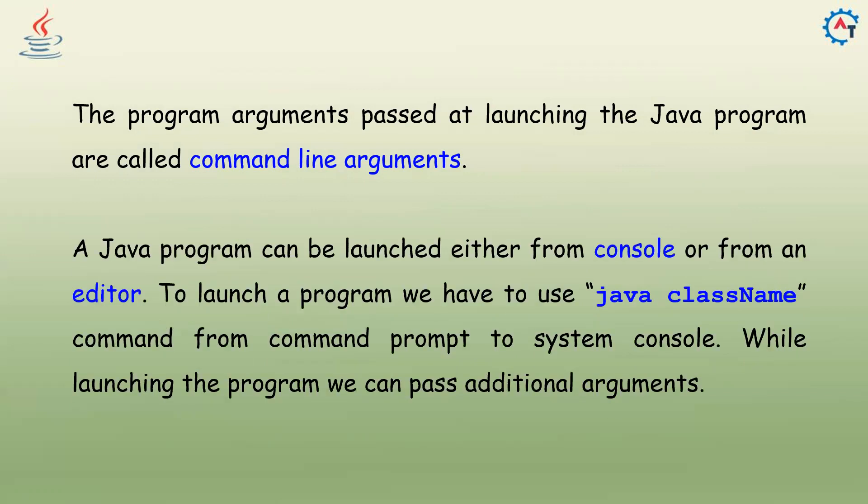A Java program can be launched either from the console or from an editor. To launch a program, we use the Java class name command from the command prompt. While launching the program, we can pass additional arguments. You can execute your program from the command prompt, or if you are using Eclipse or IntelliJ IDEA, you can use command line arguments from the IDE itself — but here we will use only the command prompt.